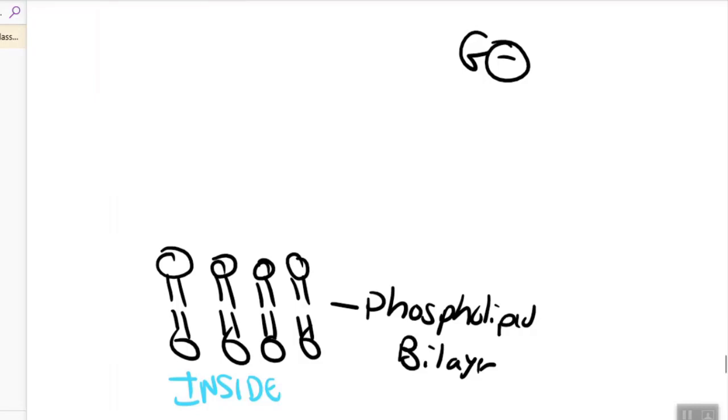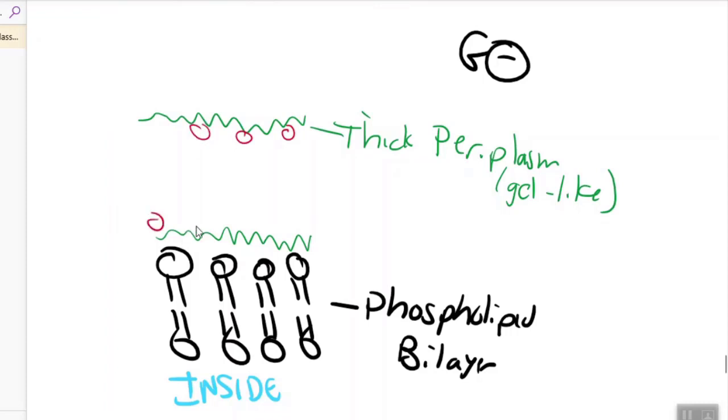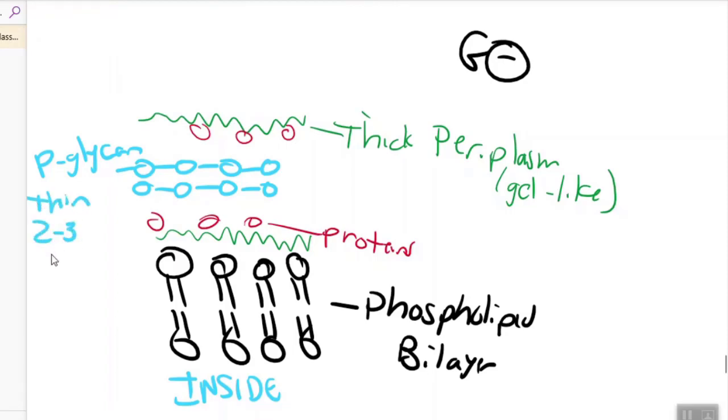After the phospholipid bilayer, we're going to have a periplasm, but this periplasm is very thick. The periplasm is a gel-like material, and there's a lot of really important little proteins embedded within it. These proteins have a lot of important functions. The next thing we're going to have within the periplasm, inside of it, that's where we're going to find the peptidoglycan. But it's very thin, maybe like two to three layers of it.